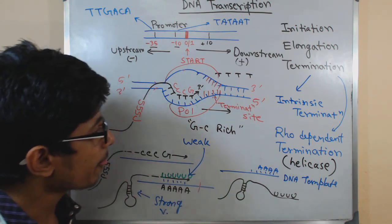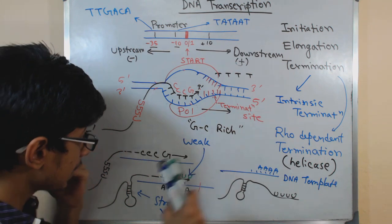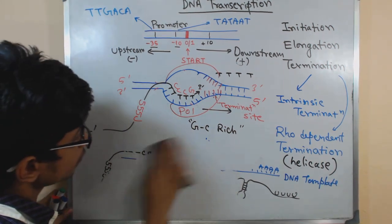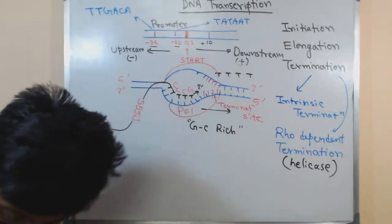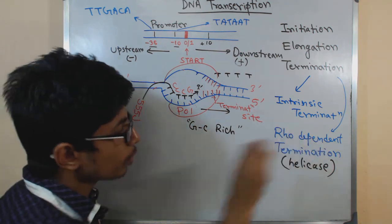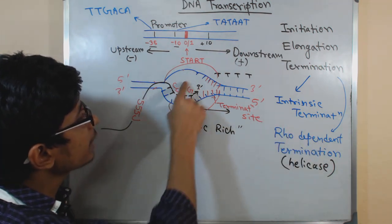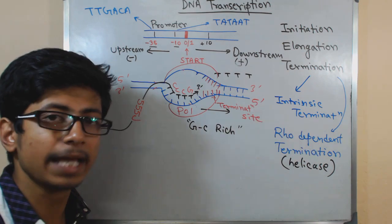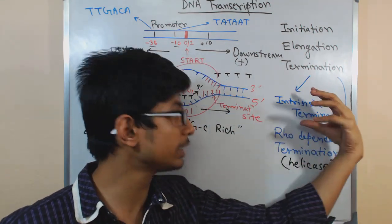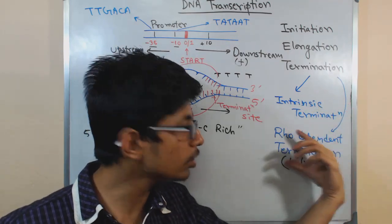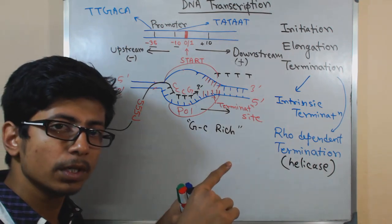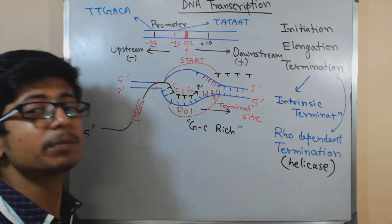The second type is rho-dependent termination, which involves a protein called rho. Even in rho-dependent termination, intrinsic signals can still be present — it's not that a gene has either intrinsic signals or rho; sometimes both are required. The same hairpin loop can form, but the rho protein helps to dissociate the RNA faster.